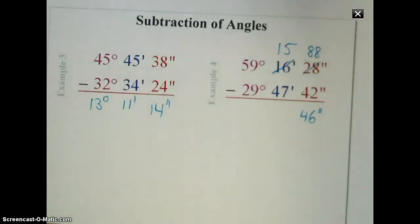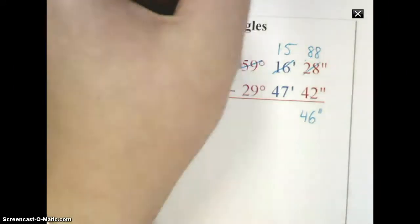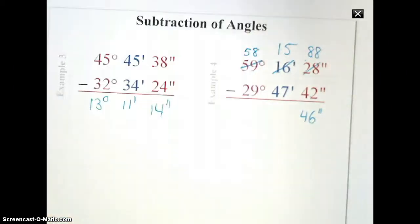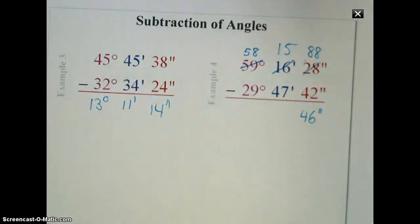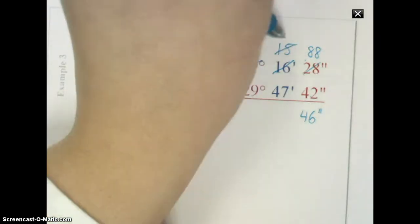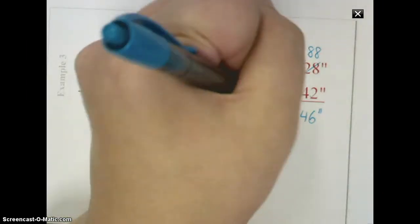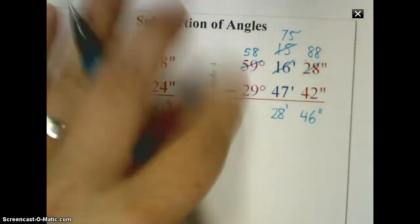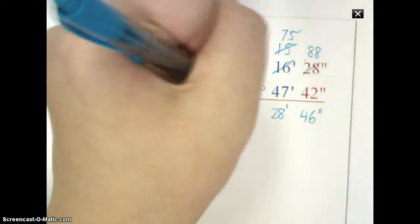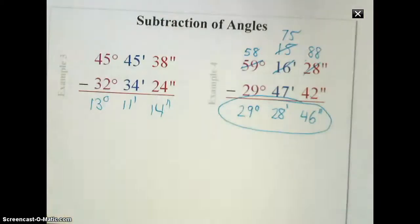But now I have the same problem in my minutes column. I have 15 minutes. I have 47 minutes. I'm going to borrow a degree. So I make that 58. And by borrowing one degree, I will now have 60 additional minutes that I can add to this, making this 75. By doing that now, I get 28 minutes. 58 minus 29 is just a simple 29. And so here's my final answer for subtraction.